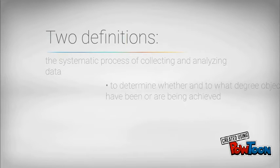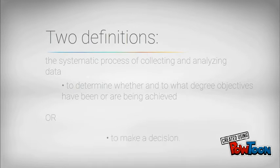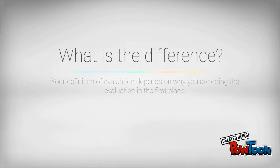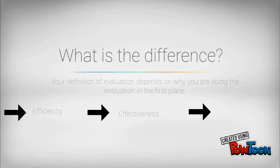Evaluation can be defined as the systematic process of collecting and analyzing data to look at a program's objectives or make a decision about a program. Your definition of evaluation depends on why you are doing the evaluation in the first place. Are you looking at the efficiency, the effectiveness, or the impact of the program?